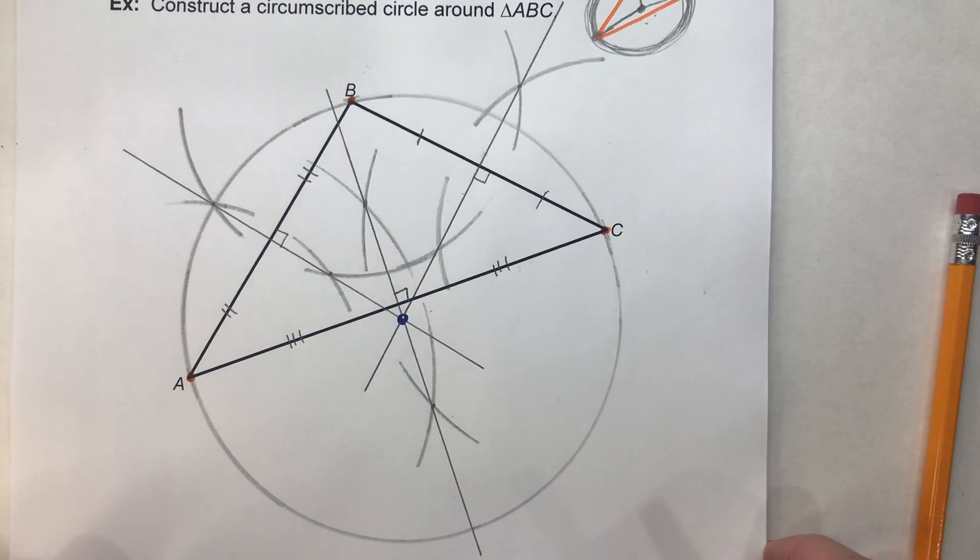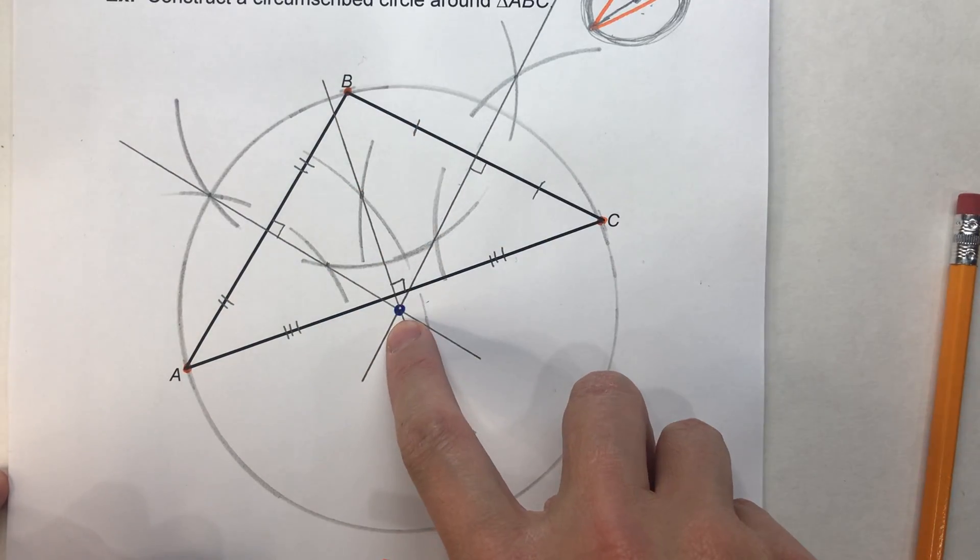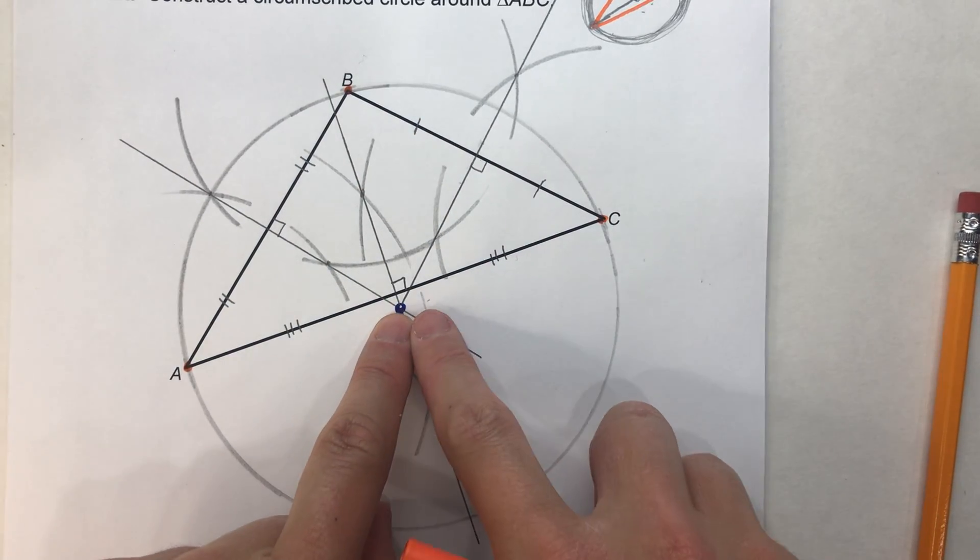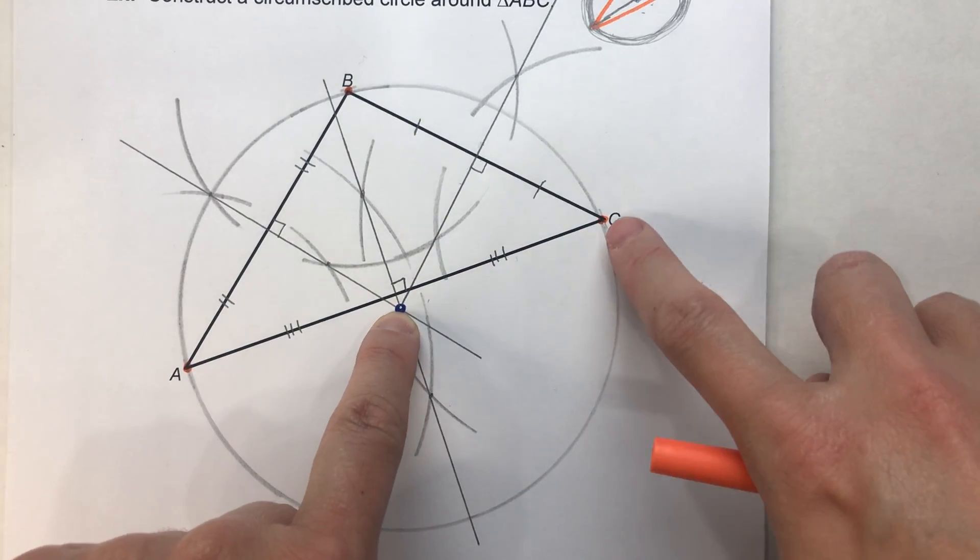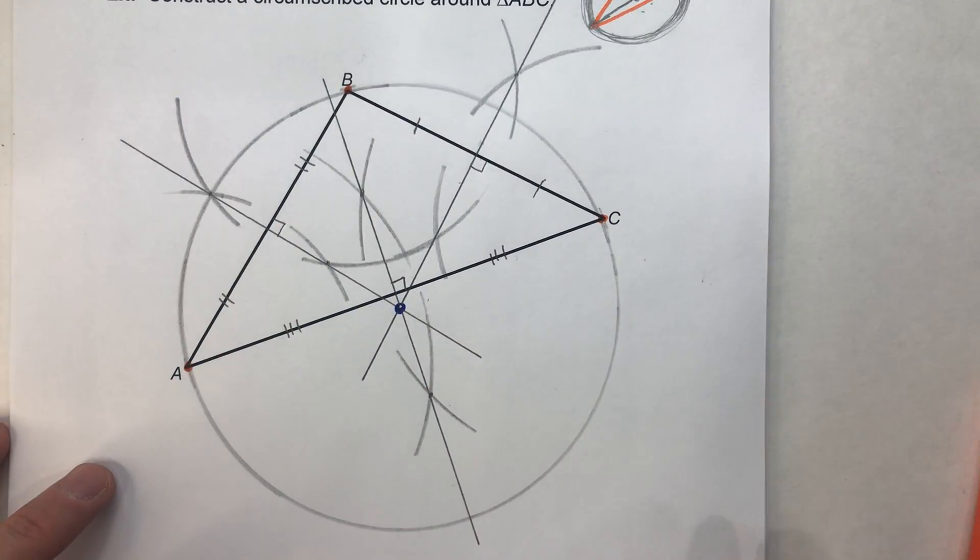But that's how you construct the circumscribed circle. Find where the perpendicular bisectors intersect, that's your center, and set your compass from that point to any of the vertices, and that circle should go through all three of them.